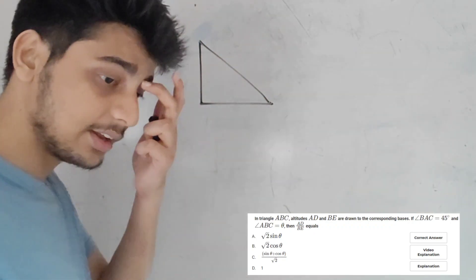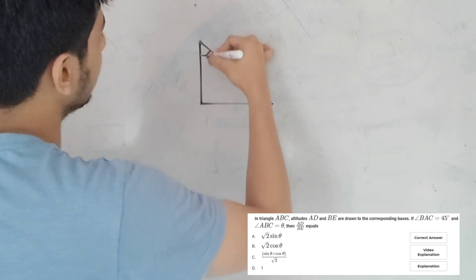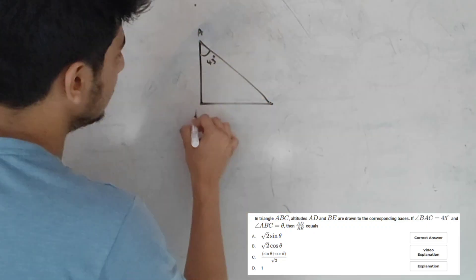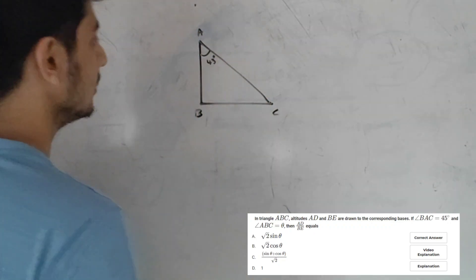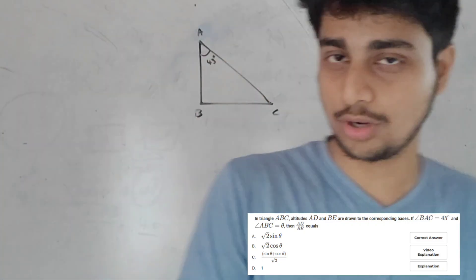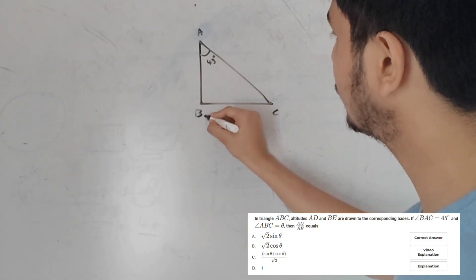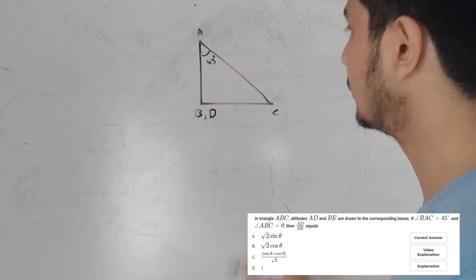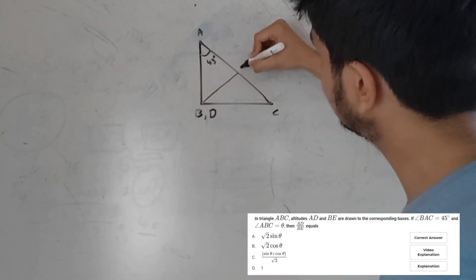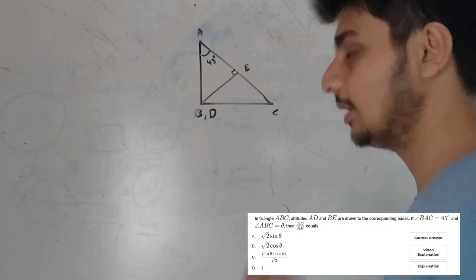They are not going to ask angle BAC as 45 directly. This angle is 45 degrees. If I go back to the right angle, angle B and C — that is 90 degrees. My altitudes are at the corresponding bases, so the altitudes are the same. B and D are the same. E is in touch.